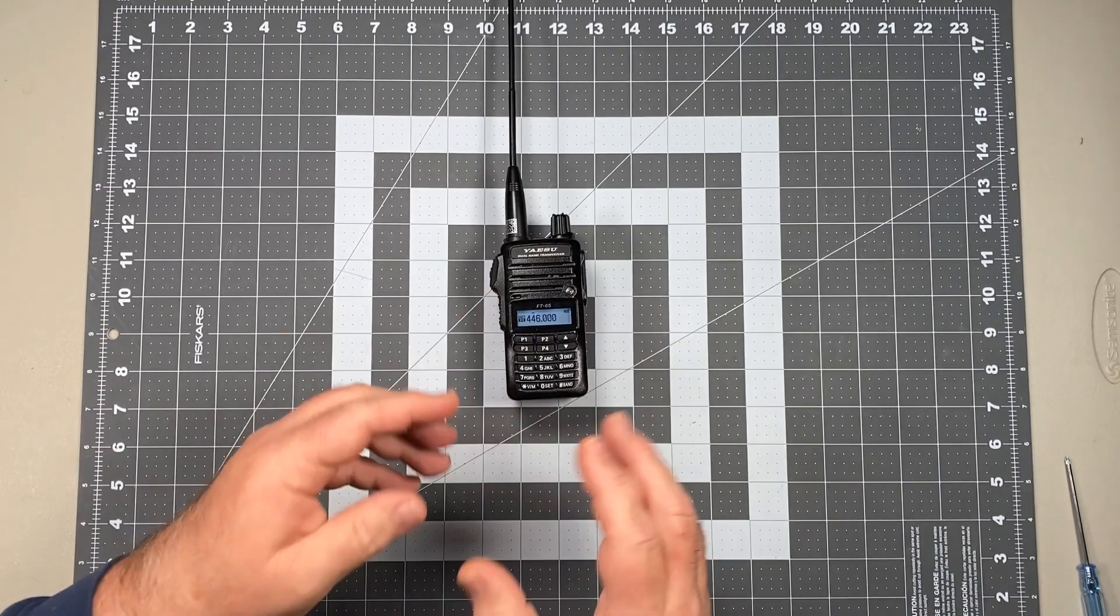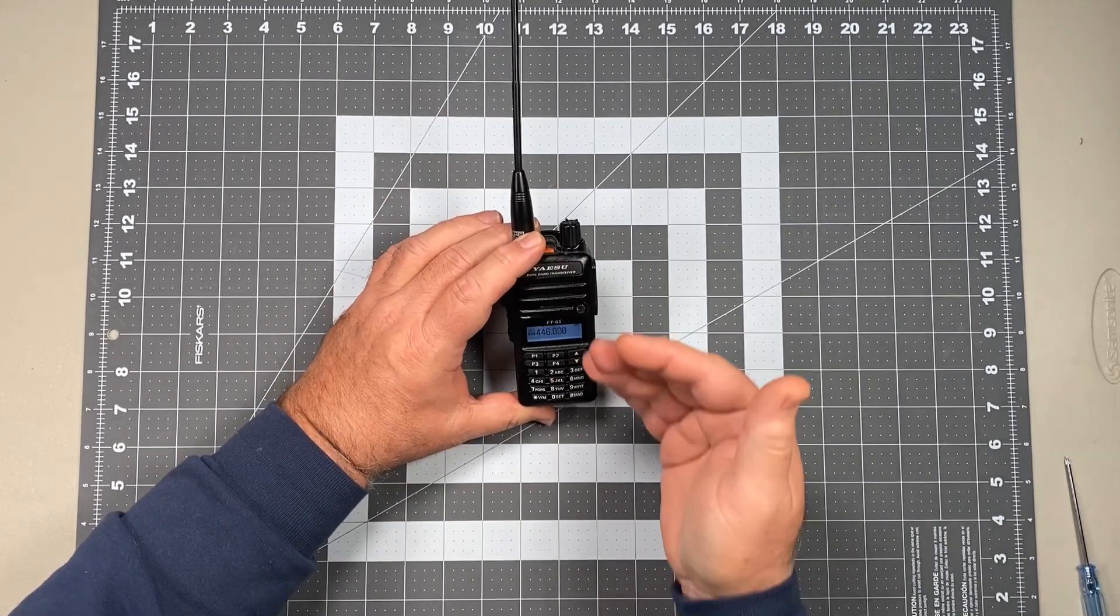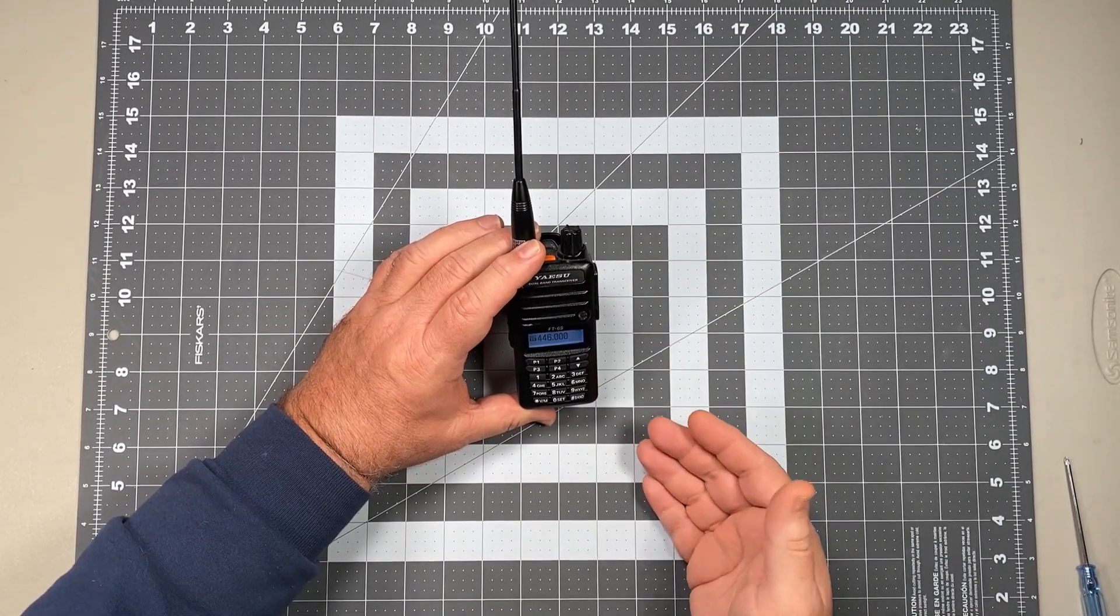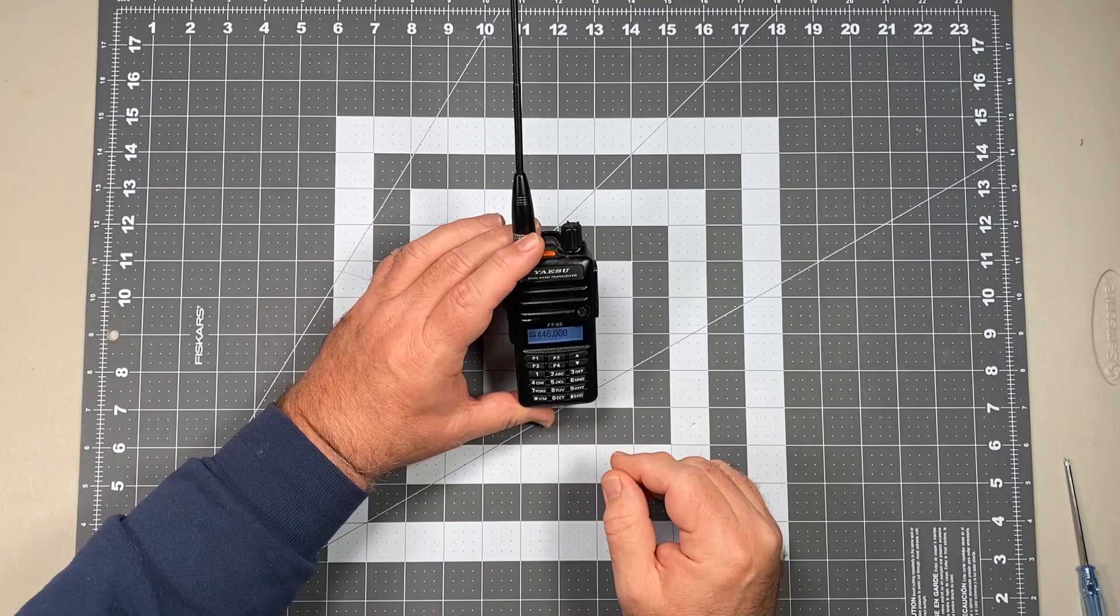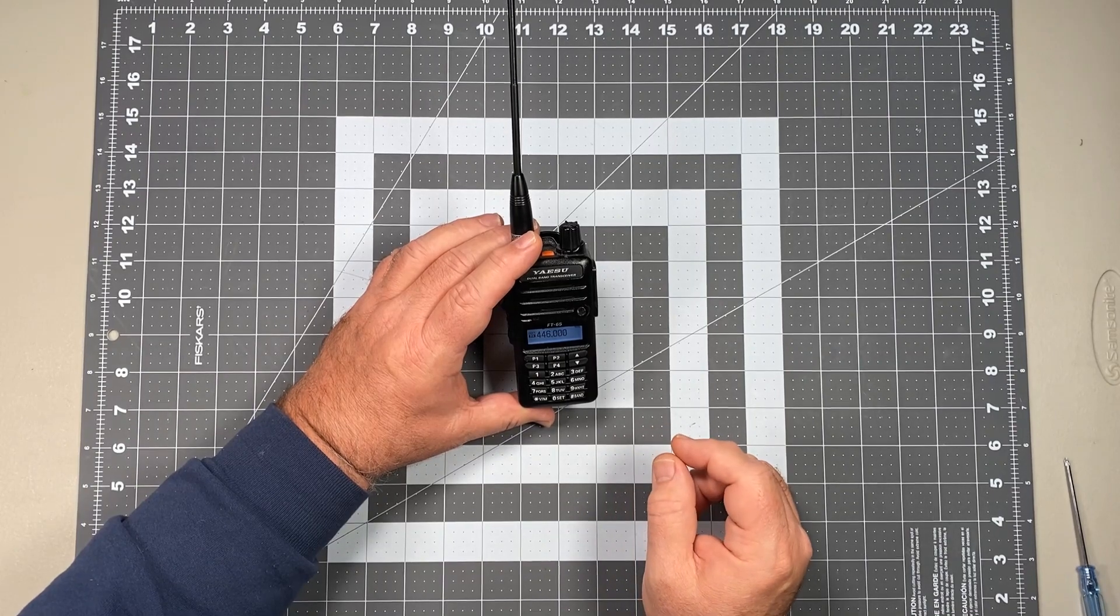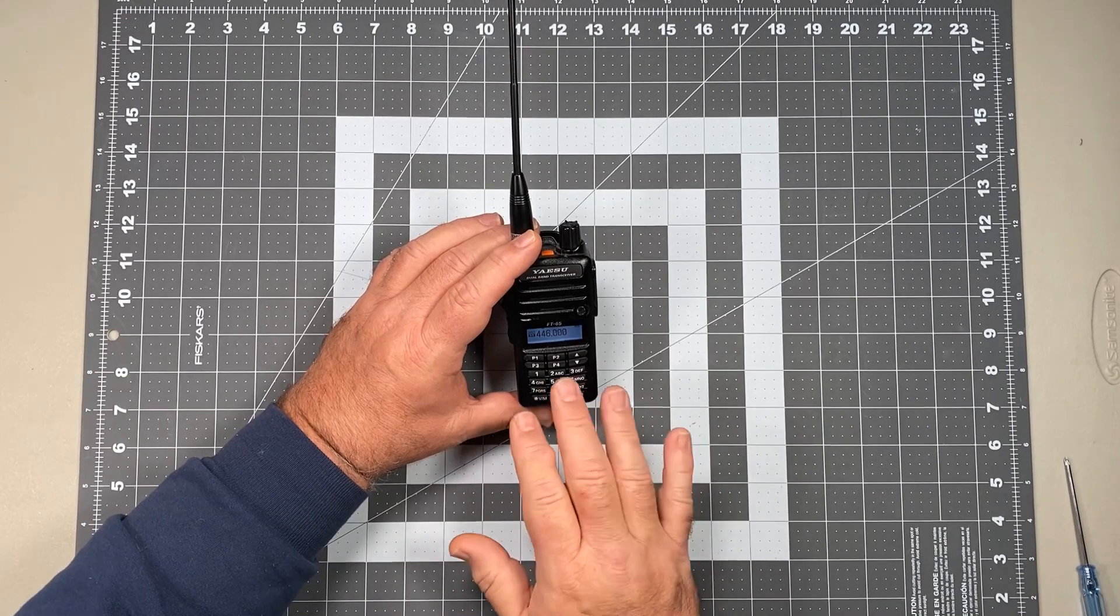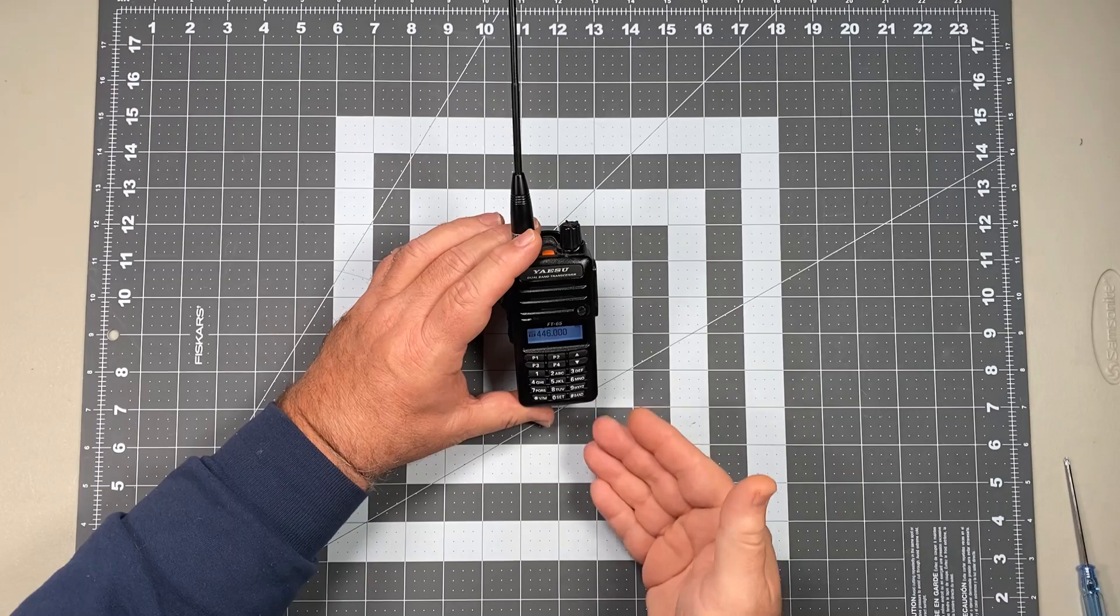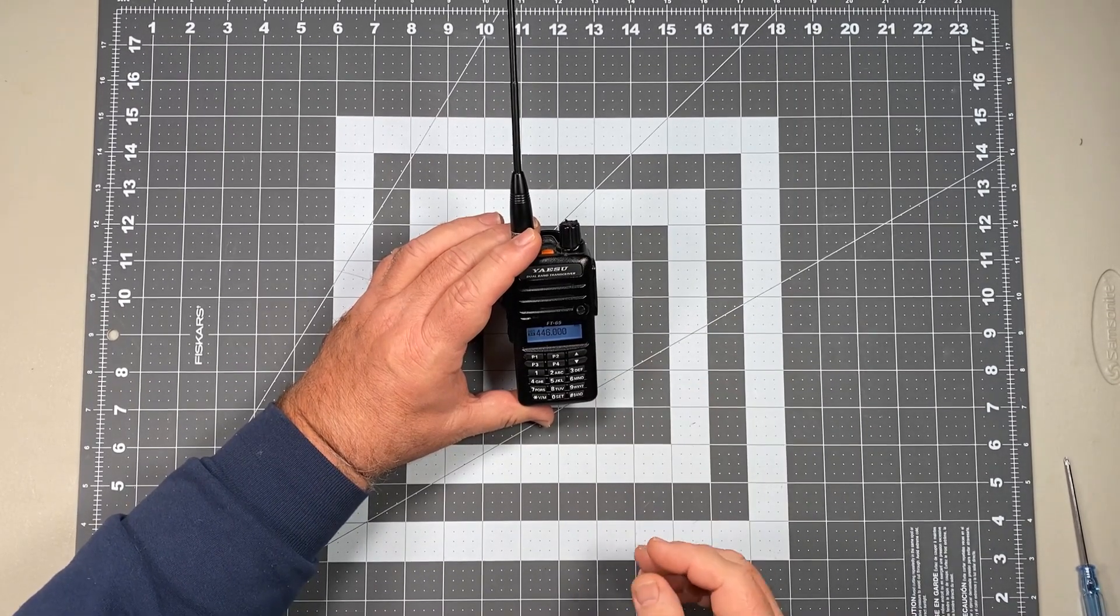So that's how easy it is to program in your simplex channels. The way I normally set my radios up is I put all of my amateur radio simplex frequencies in first, so the first channels I get to are all simplex. Now altogether, I think with our channel plan on the West Coast here, it's in the neighborhood of like 34 or 35 frequencies to put in. So it really actually doesn't take that much time. You can spend about a half an hour or so and you can put in your first 35 channels and make those all of your simplex channels.